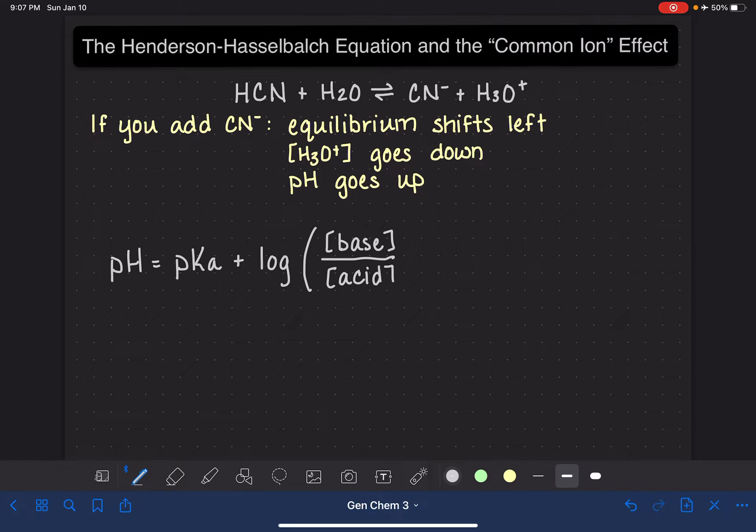I'm going to go through this equation, the Henderson-Hasselbalch equation, and make sure that you understand all of the terms. First of all, the pKa is calculated by taking the negative log of the Ka. Just like pH is the negative log of H3O+ and pOH is the negative log of OH-, pKa is the negative log of the Ka.